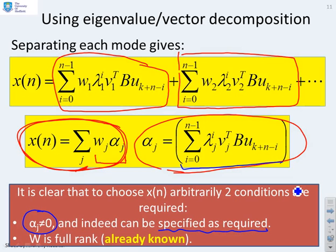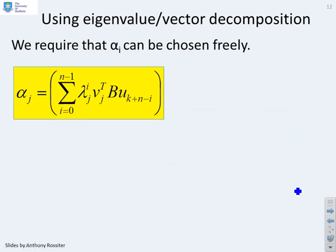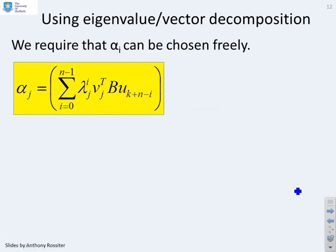But there is a caveat, the same caveat as we saw in video 2. Here's the definition of the alphas, and we require that we can choose these however we please. But within this expression, there's this beta term, beta j transpose equals v j transpose b.